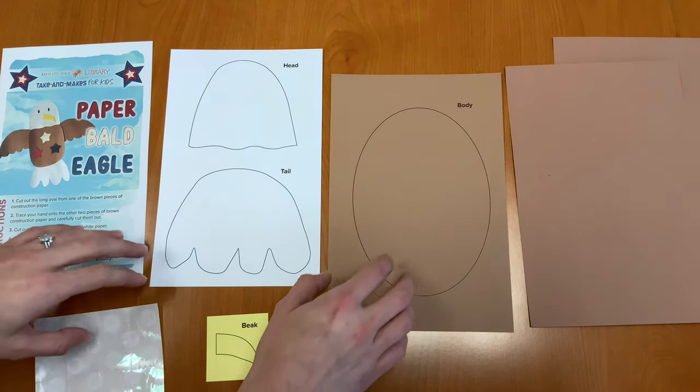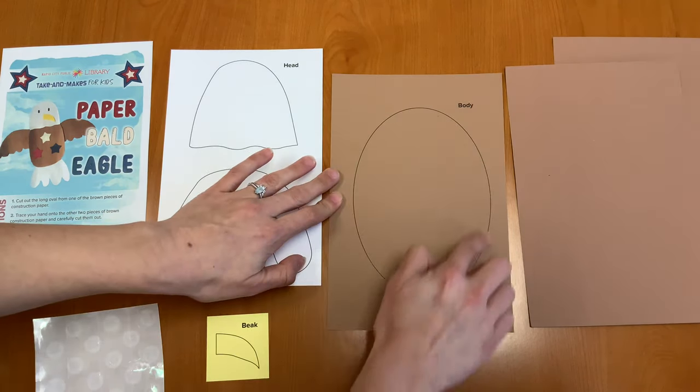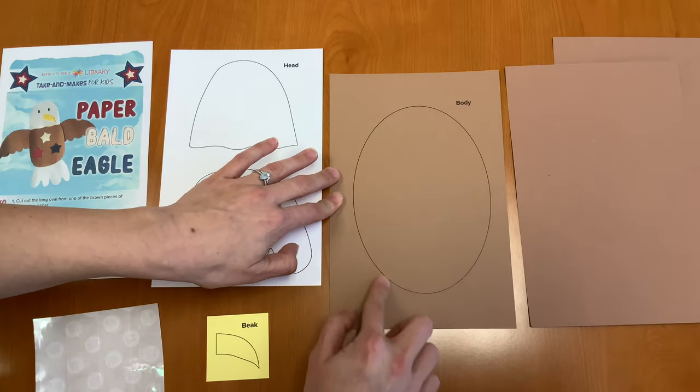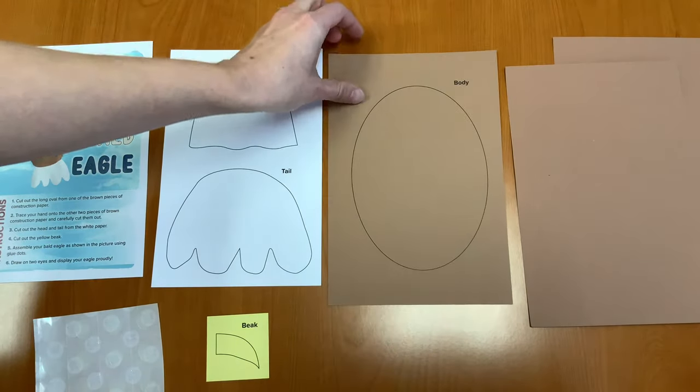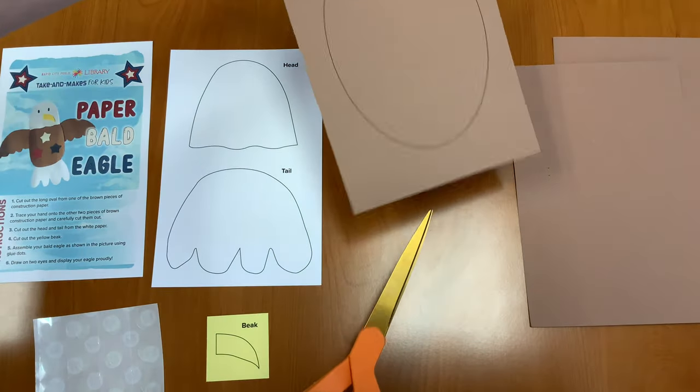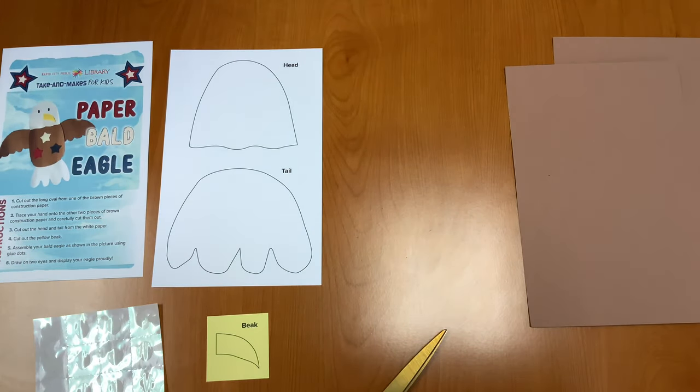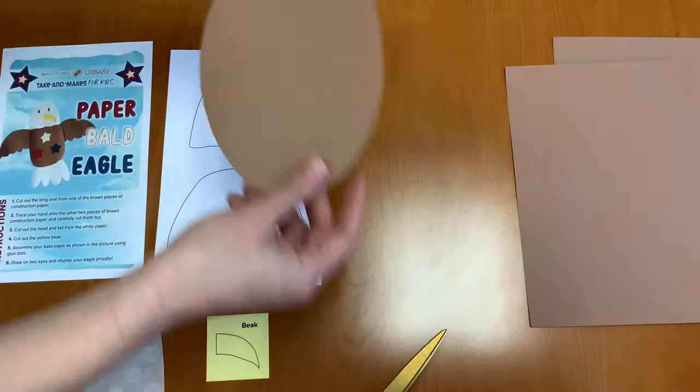Our first step is to cut out the long oval from this brown piece of paper. So this is going to be our body. We're going to take some scissors and carefully cut this out until we have our oval.